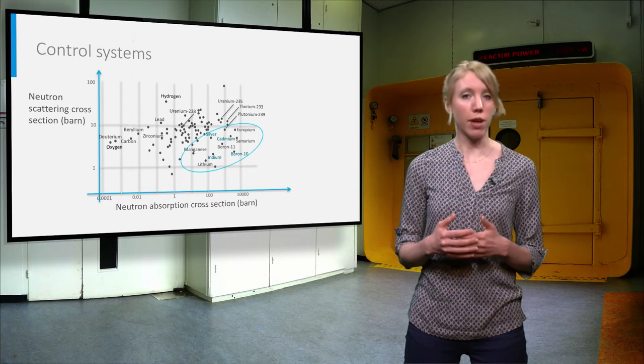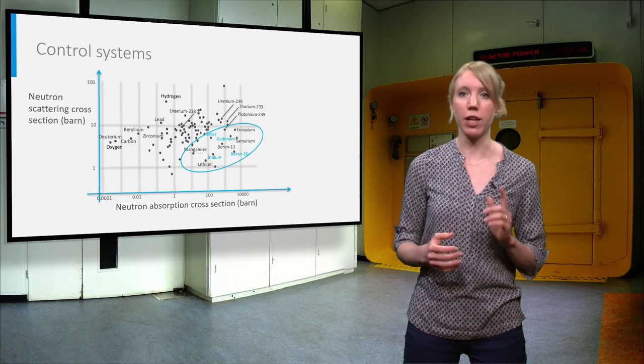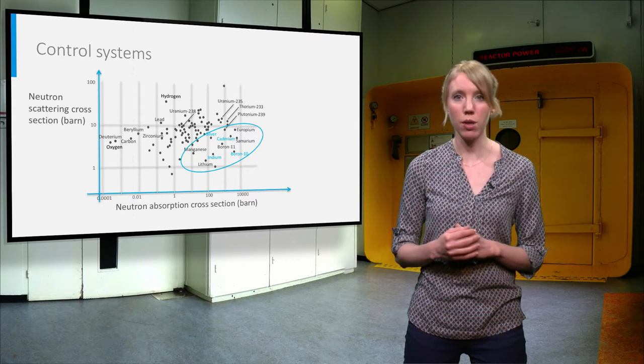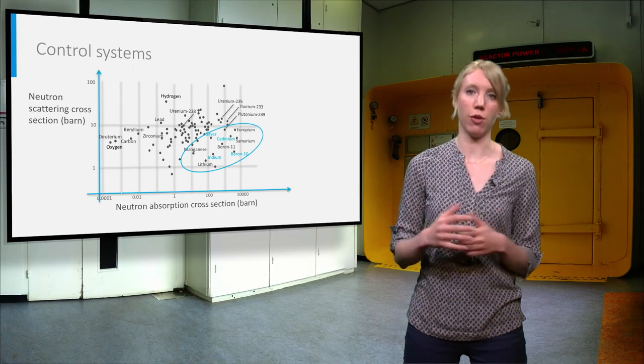They are found on the right side of the figure, excluding the elements uranium, plutonium and thorium, which are fissile or fertile and used as nuclear fuel.